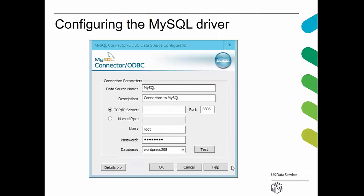Looking at the MySQL configuration, it's very similar: you provide the root username, password, and the database you're interested in using. On both the Hive and MySQL configuration screens there is a test button — if you click it, it will make a connection to the database just to check you've given all the correct information. It's a very useful thing to do to make sure you have a legitimate connection into that database system.